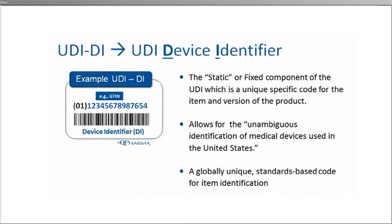The first part of a UDI is the device identifier, known as the UDI-DI. This is the static or fixed part of the UDI. In this example on the left, we show a device identifier, which in this case is a GS1 GTIN, or Global Trade Item Number. GS1 is one of the choices you have for a unique labeling format. The purpose of this component of the UDI is to enable the unambiguous identification of a medical device used in the US, and eventually globally.